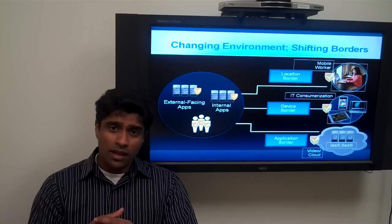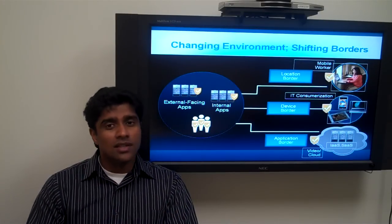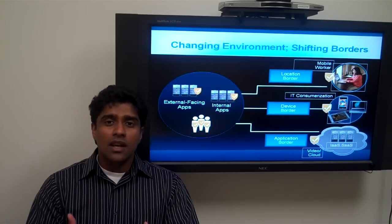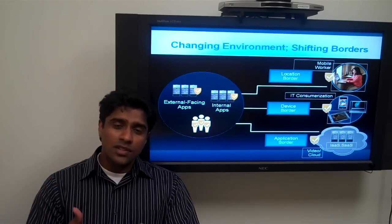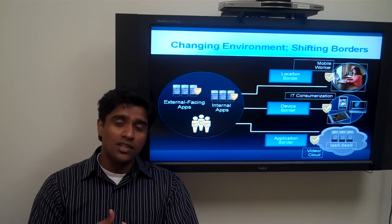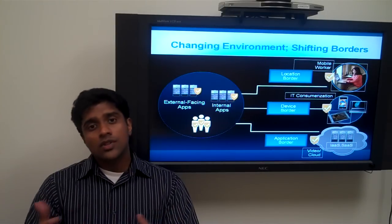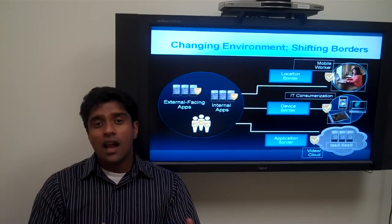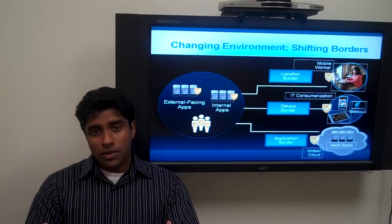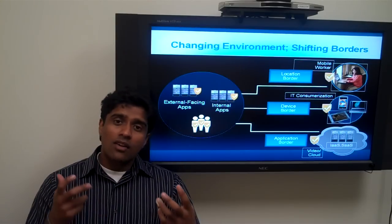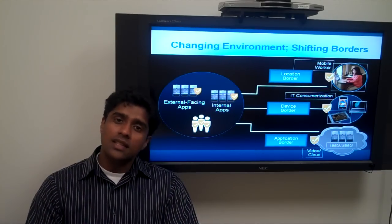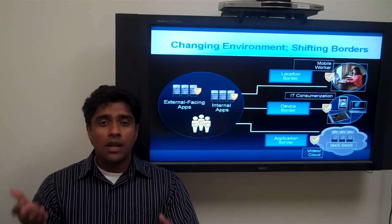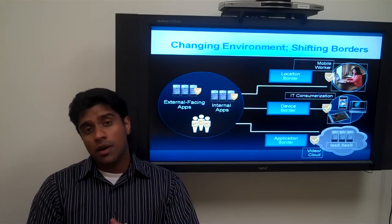The last part is application borders. We are talking about internal versus external applications and how this area is changing rapidly. One of the trends accelerating this change is cloud computing — on premise versus public cloud. So Cisco internally, we are working on our strategy with cloud computing: how we will virtualize our internal environment while at the same time exploring opportunities with cloud computing, both on premise as well as a public cloud strategy.